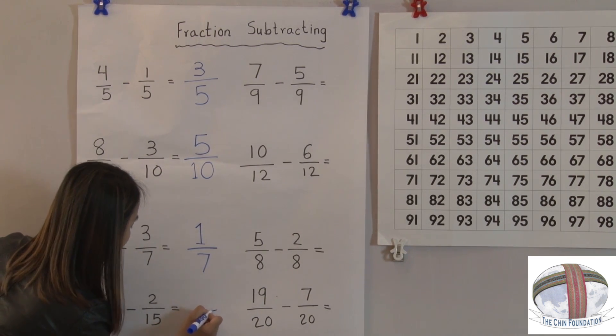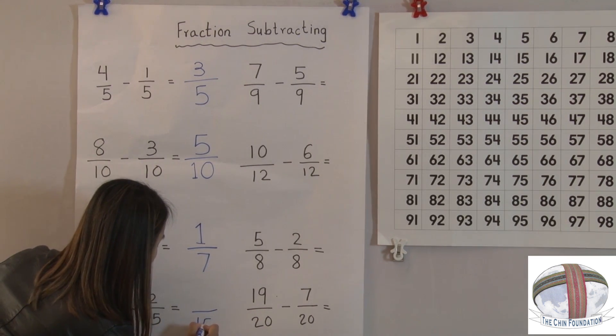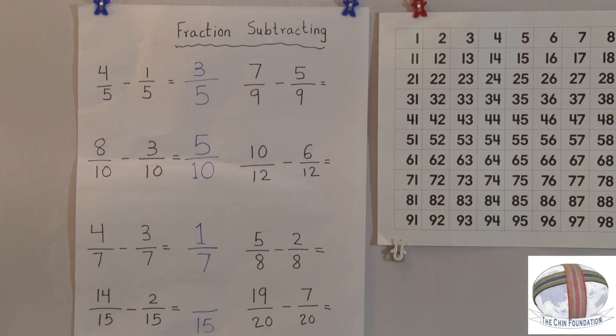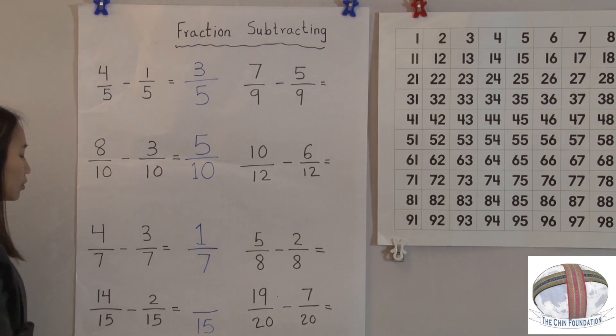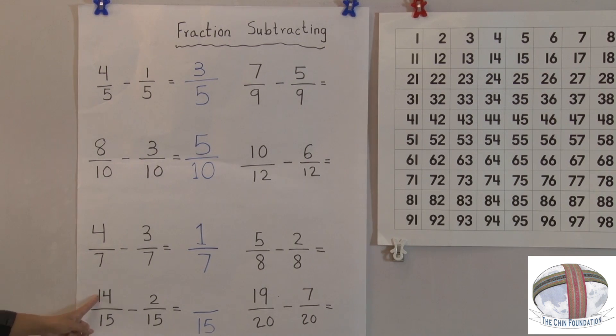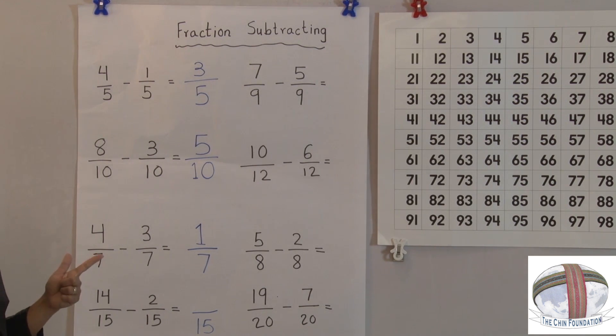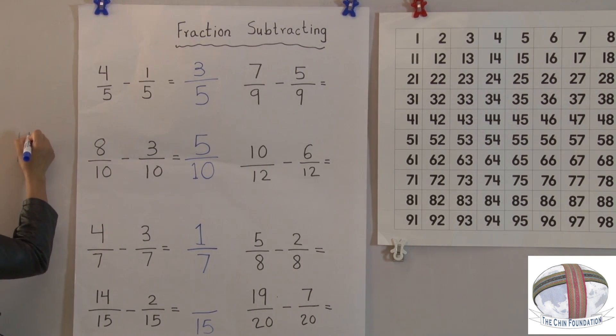It's the same. We just need to write it down. 15. 14 minus 2. 2 will come up to, we started 2 and then we'll come up to 14. 4 minus 2 is 2. 1 minus nothing is 1, which is 12.